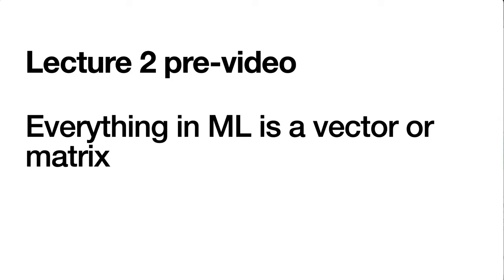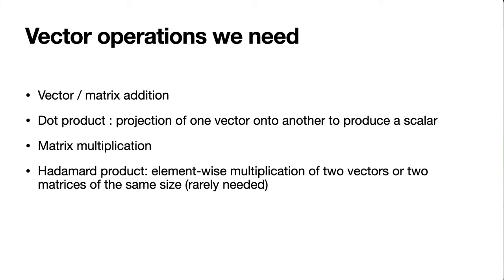So we're going to do a quick little linear algebra review because of course everything in machine learning is either a matrix or a vector. We're going to need a couple of different things from linear algebra: the usual kinds of vector addition and matrix addition.